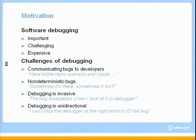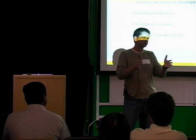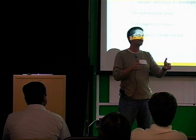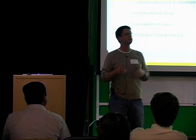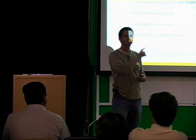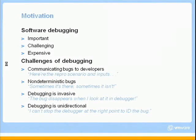A final challenge of debugging is that debugging is unidirectional. This seems a little weird at first, but those who have debugged know this common problem: you get to a certain point and say, 'Aha, I know I have a problem,' but the manifestation of that problem occurred earlier — you've sort of gone too far. I think you're all thinking it.